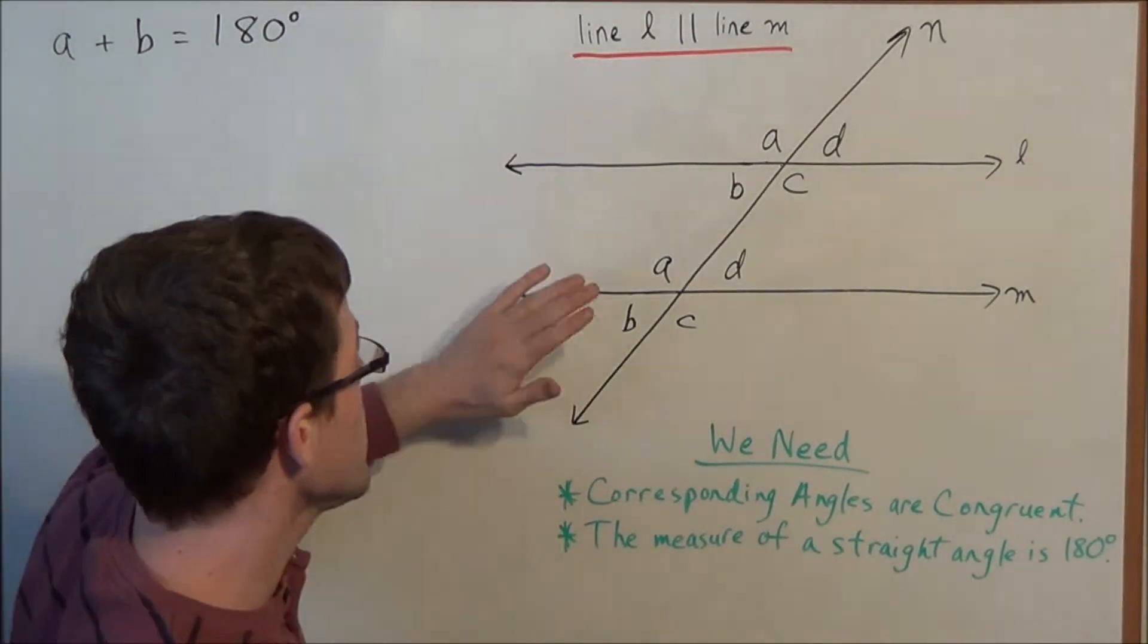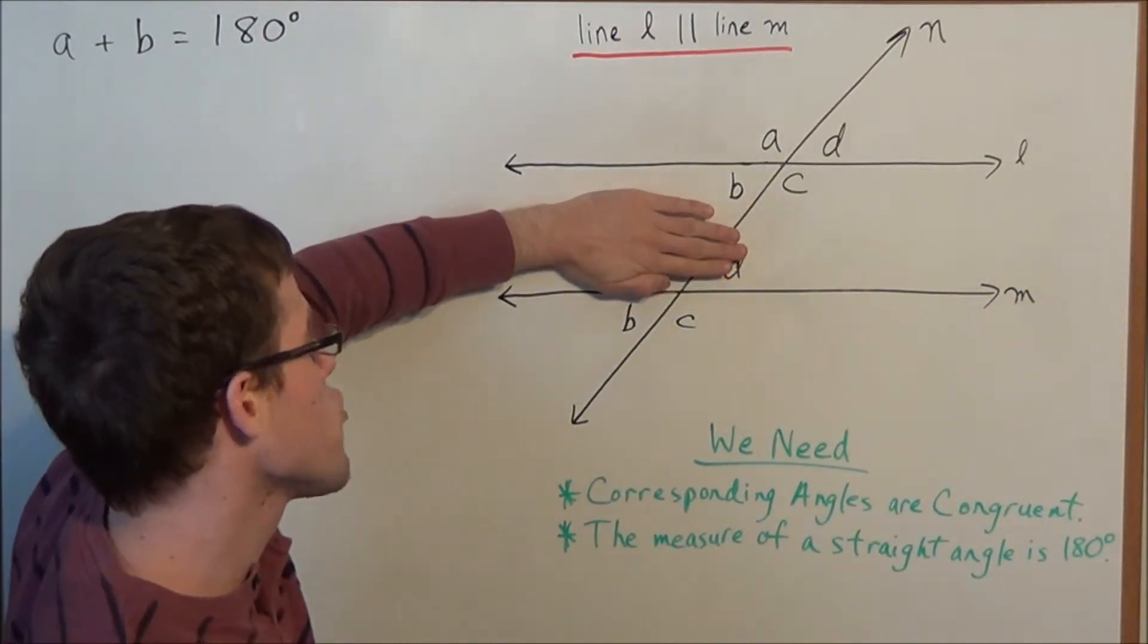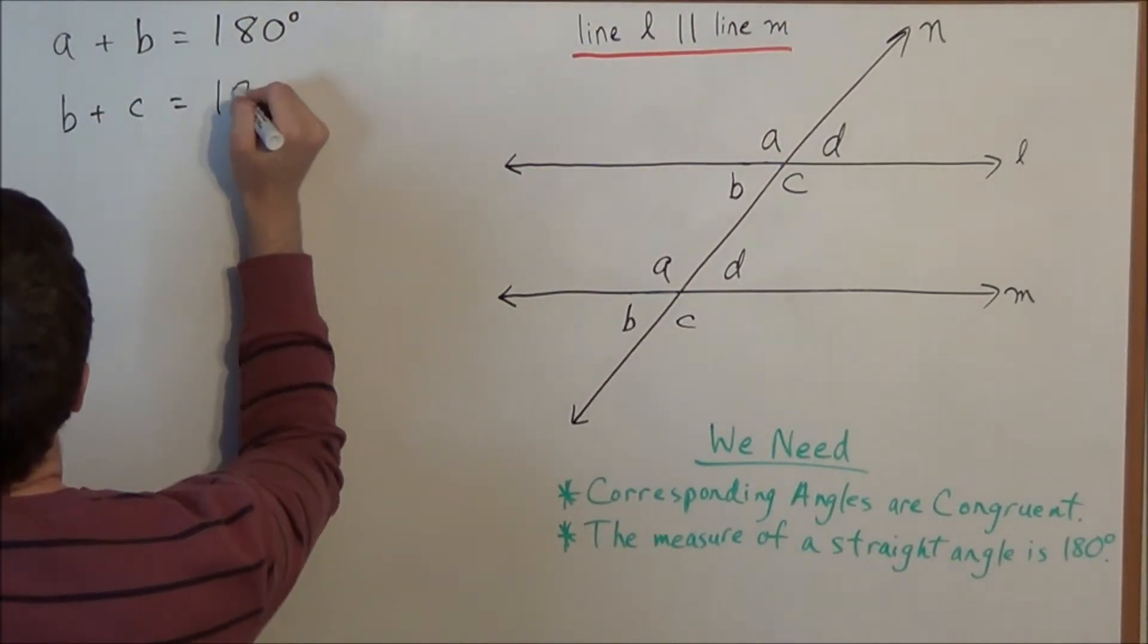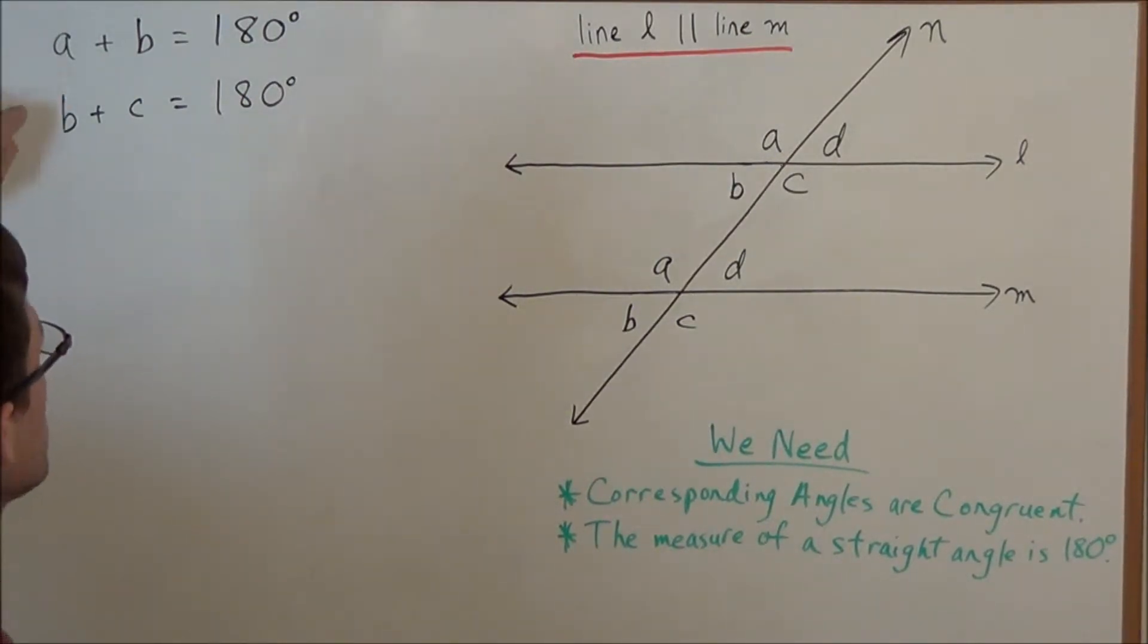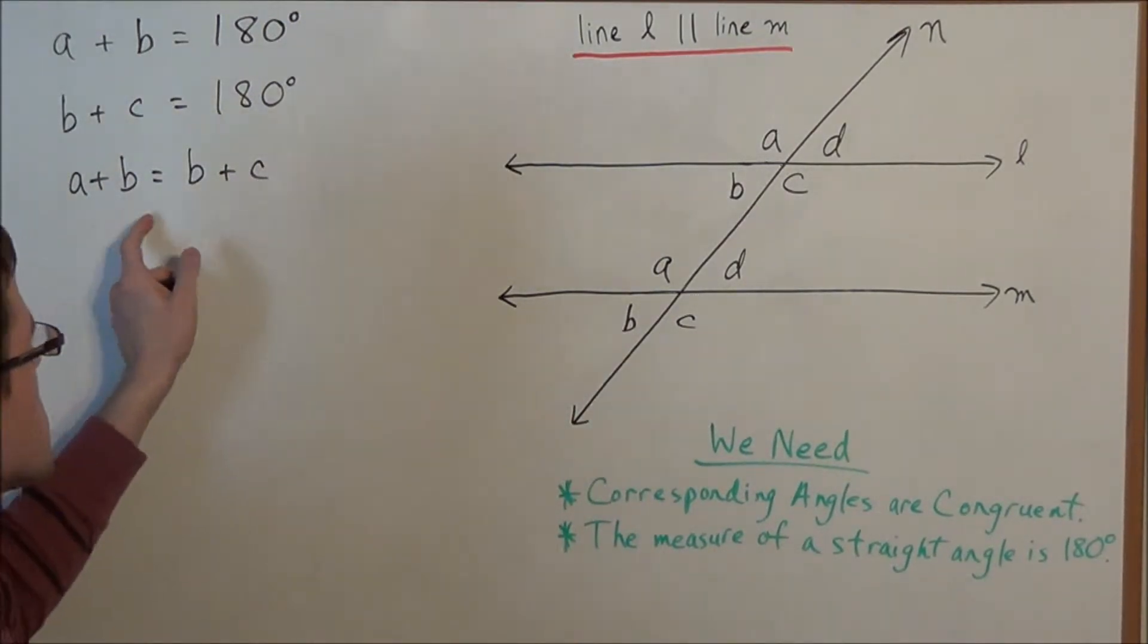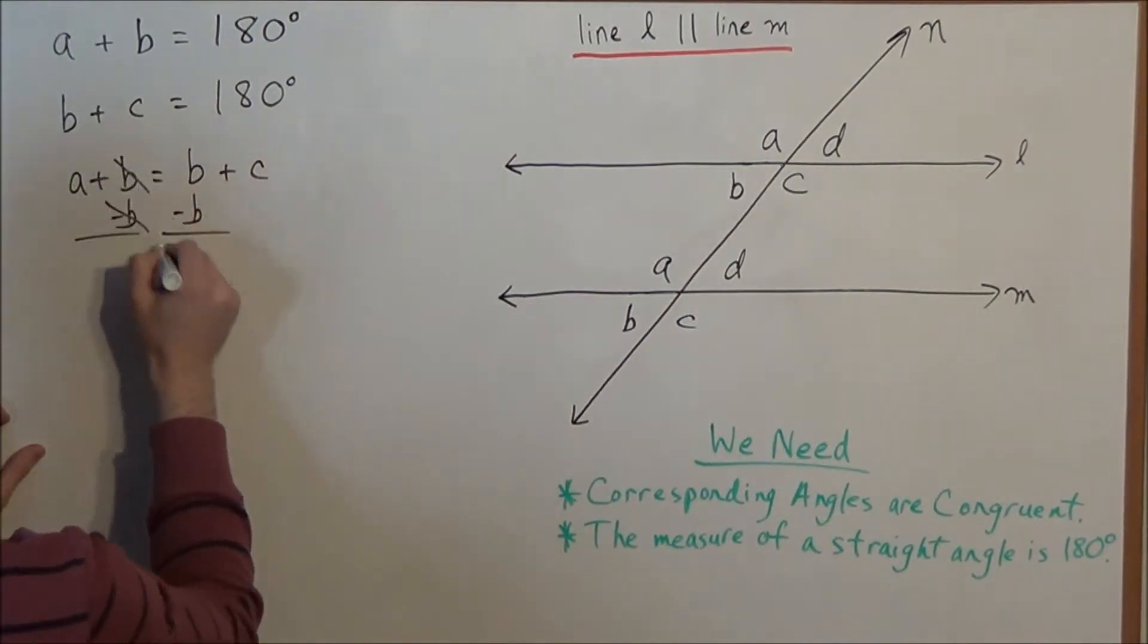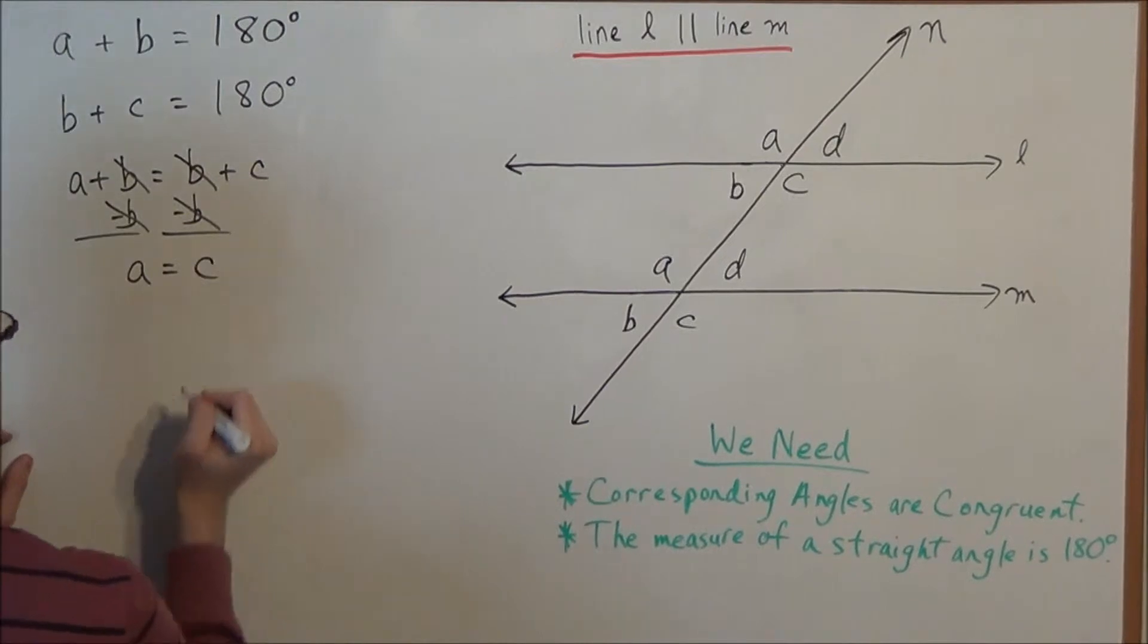And now what else could we say? Well, we have angle B plus angle C, they also form a straight line. So B plus C equals 180 degrees as well. So now using transitivity we have two expressions that sum to 180 degrees. So those two expressions must be equal. So we have A plus B equals B plus C. So now we could subtract B from both sides and we have that B will cancel out on the left side and B will cancel out on the right side, leaving us with A equals C.